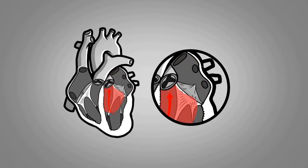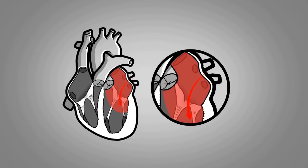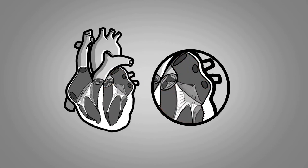In its mildest form, the leaflets of the valve protrude into the left atrium without causing the valve to leak, so it does not allow blood to flow into the left atrium.